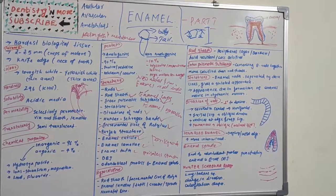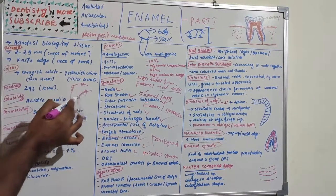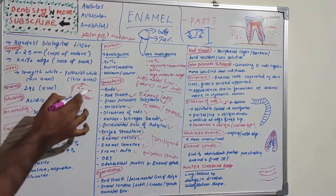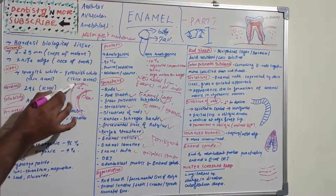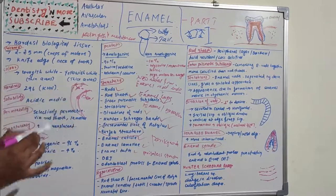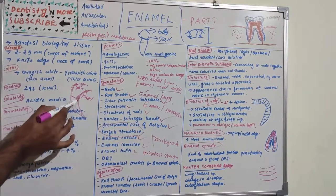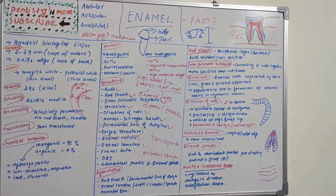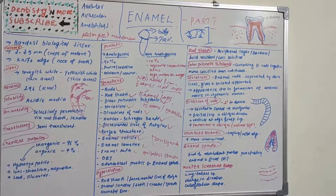Enamel lamellae have three types: Type A is restricted to enamel, starting from the outer enamel surface. Type B may reach up to dentine and consists mostly of degenerating cells. Type C contains organic material and may cross the dentino-enamel junction into dentine.